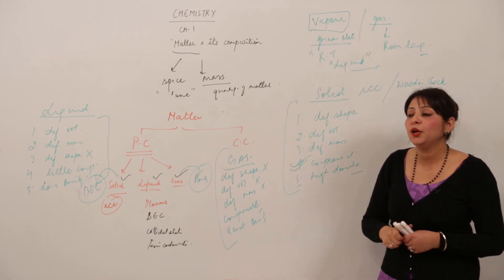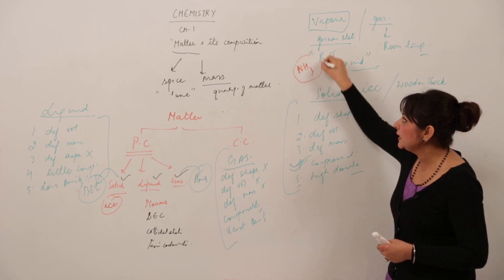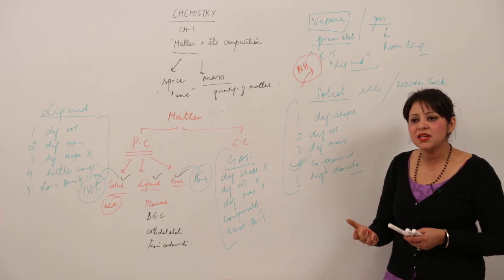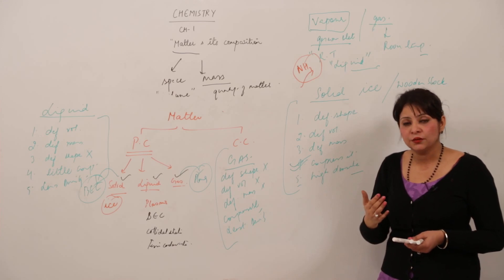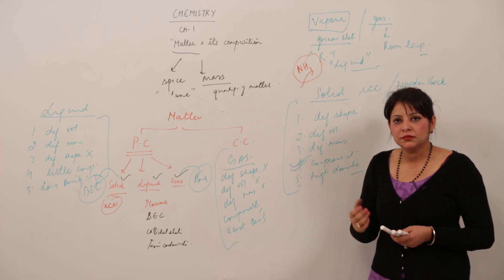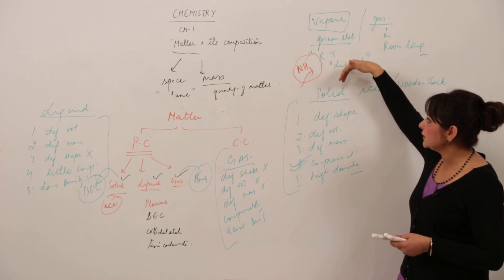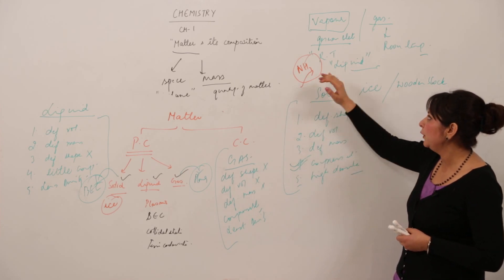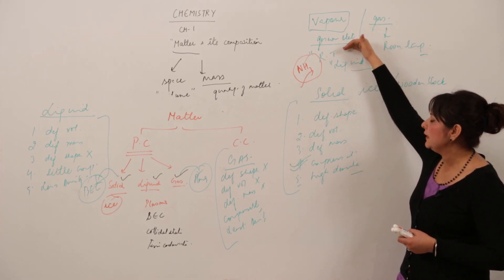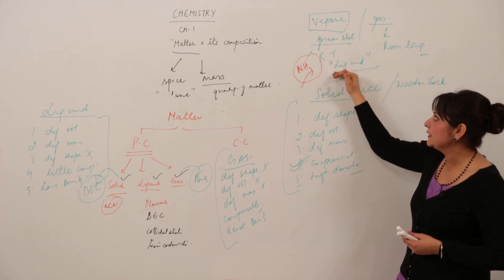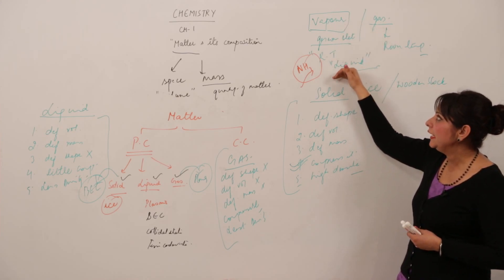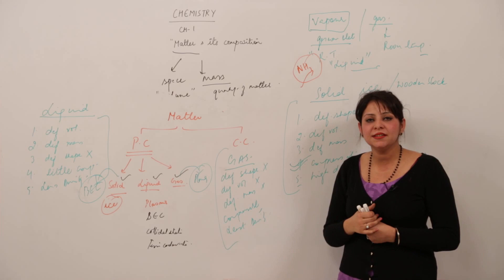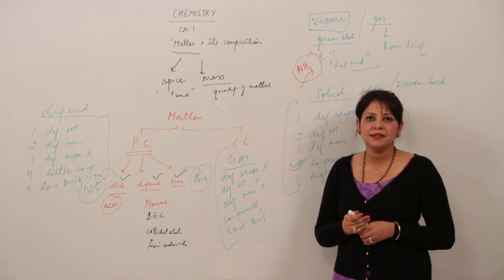For example, ammonia exists as gas at room temperature, so it is called a gas. But when heated, we get ammonia vapor. More clearly, water at room temperature exists as liquid, but when heated it exists in a gaseous state — and that is called water vapor. So water vapor means the substance otherwise exists as liquid, but above room temperature it exists as vapor.